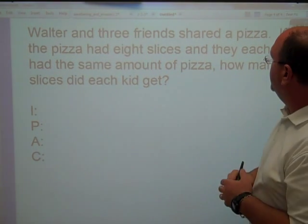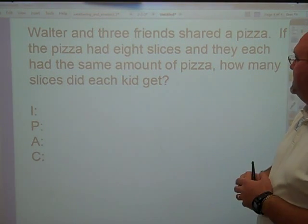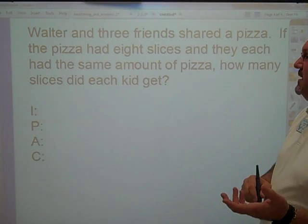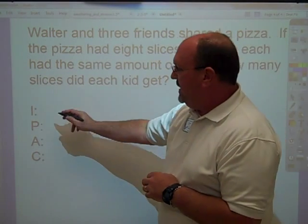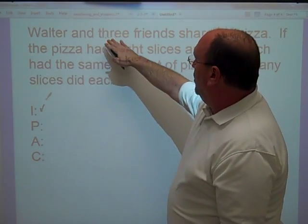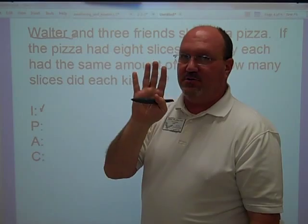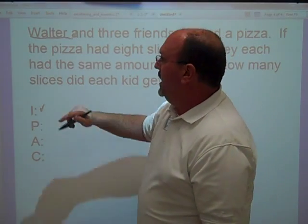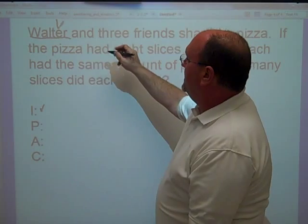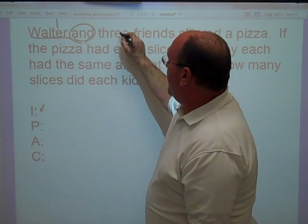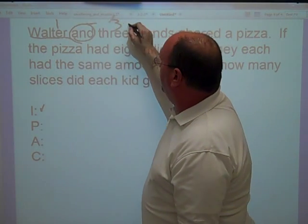Walter and three friends shared a pizza. The pizza had eight slices and they each had the same amount of pizza. How many slices did each kid get? Let's talk about the information first. Walter and three friends. Now it's important that we understand Walter represents one. So we'll say, okay, Walter and three friends. Key word is and, and three friends. That's one plus three. Now we're talking about four people.